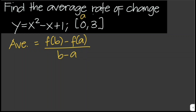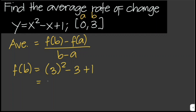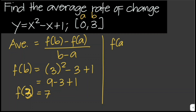So these are our a and b values. Let's solve for f of b: that would be 3 squared minus 3 plus 1, which is 9 minus 3 plus 1, that is 6 plus 1 equals 7. So f of 3 is equal to 7. And f of a, where a is equal to 0, we substitute 0 into the equation: 0 squared minus 0 plus 1, so this is 1.